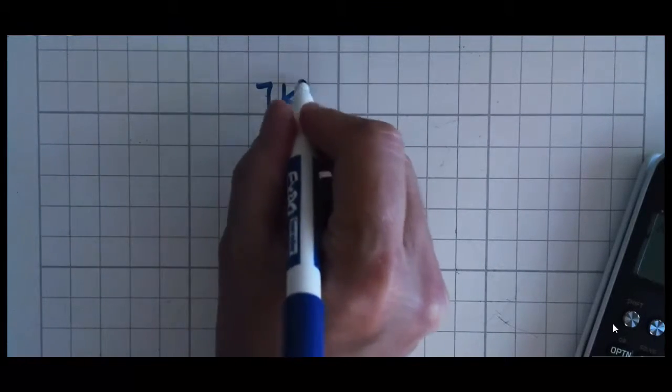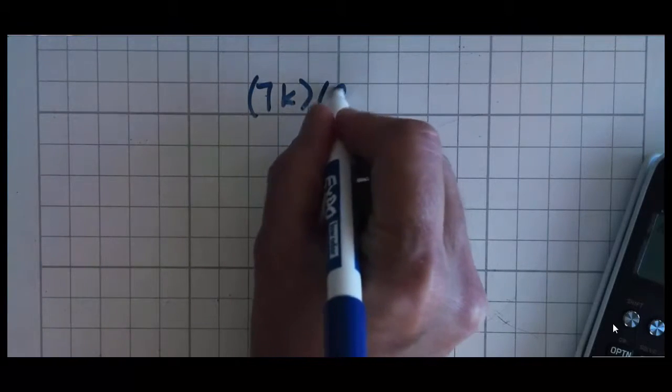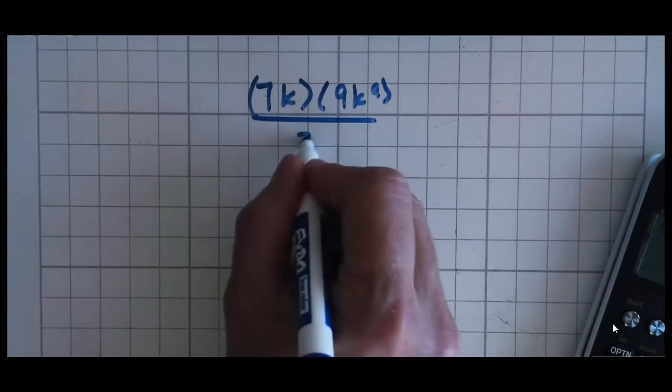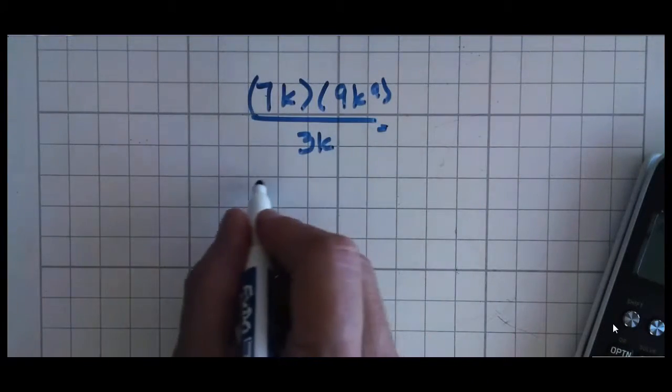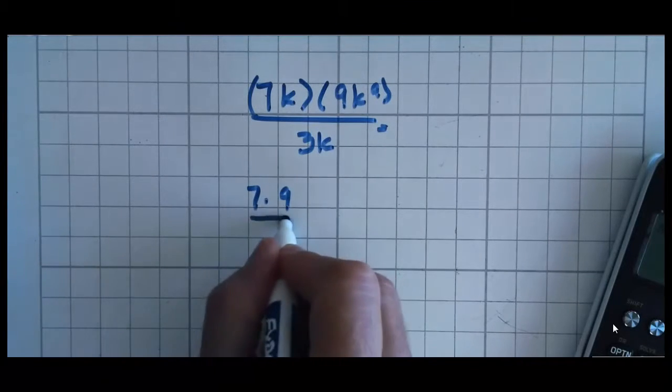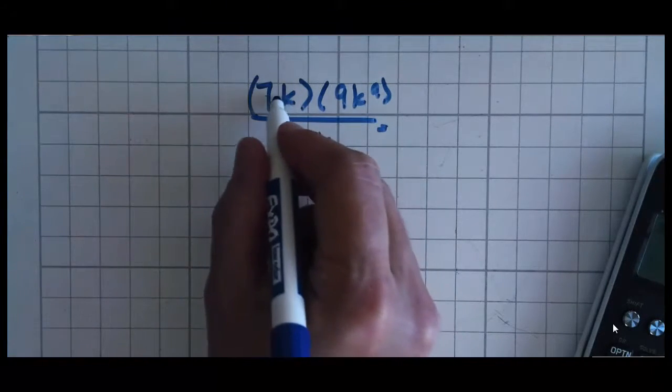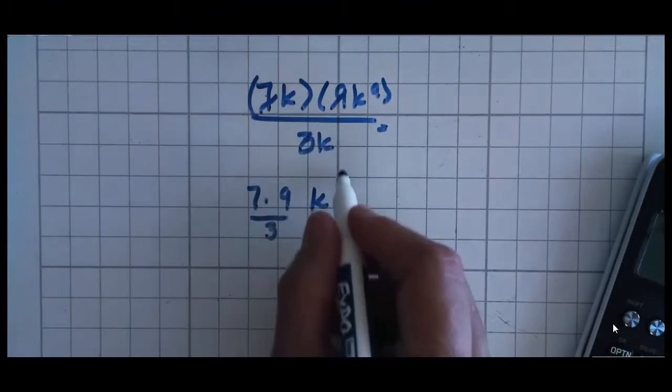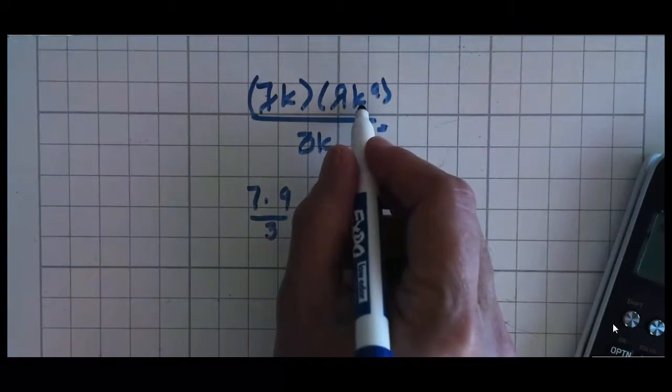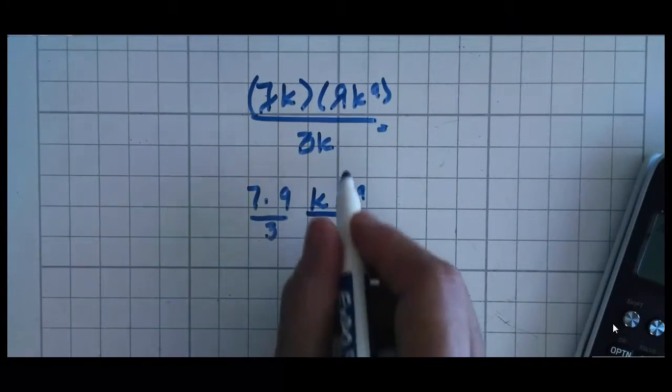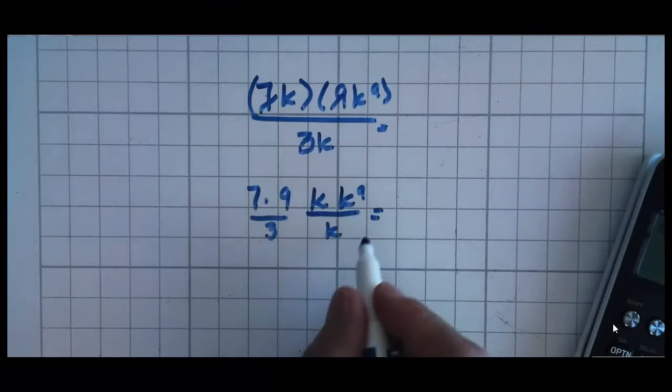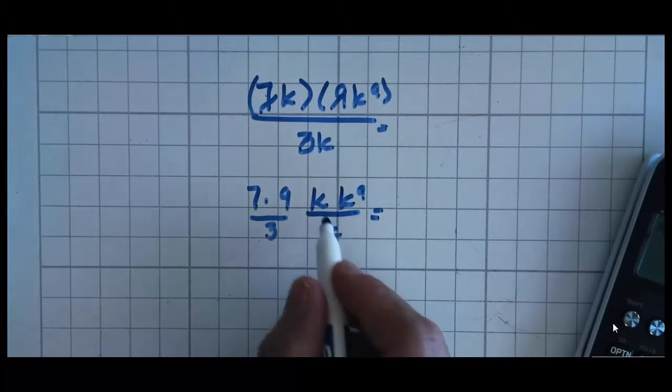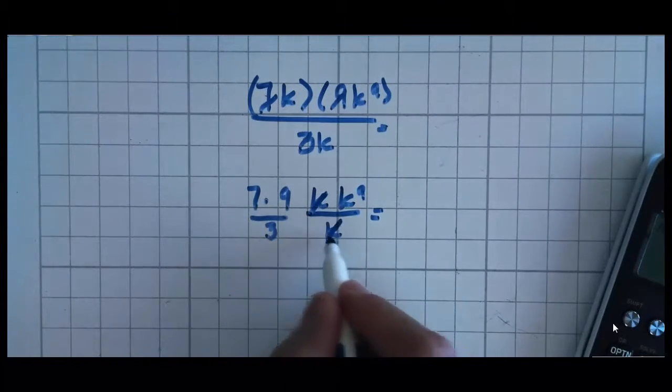So what happens when you have letters, variables, and integers together? Well, the easiest way to do it is to separate out the numbers from the letters. So this becomes 7 times 9 divided by 3. That's my numbers. And then I have a k from here, a k to the 9th from here, and a k from here. Now let's see if we can simplify this. If there's anything that's the equivalent to 1 in here that we can basically cancel out before we move on. Well, I see I have a k and a k, so I can cancel those out.